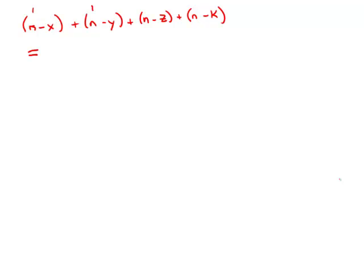I have 1, 2, 3, 4n, so I'm going to put those together, 4n minus x minus y minus z minus k.